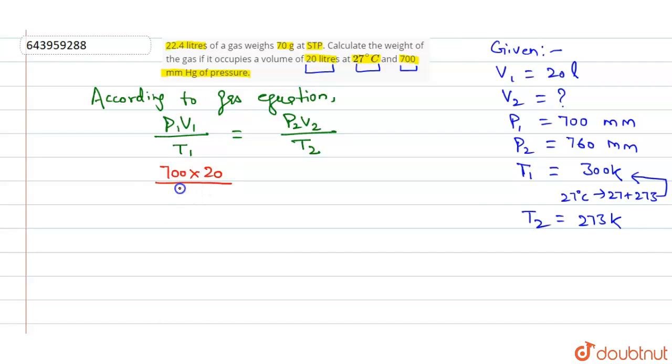And what is T1? T1 is 300. If we go to the other side, what is P2 here? P2 is 760. V2 we have to find. And what is T2? It is 273.